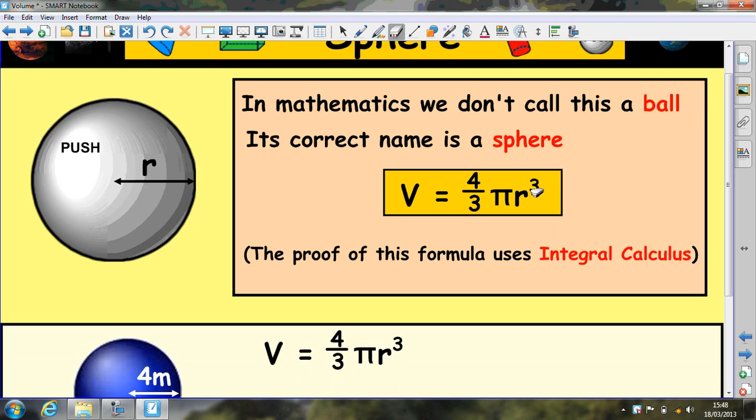All these formulas, the cone, the cylinder and the sphere will be in your formula sheet. You do not have to memorize them. But there's a cube here. A lot of people copy it down as a square and get the answer wrong as a result.